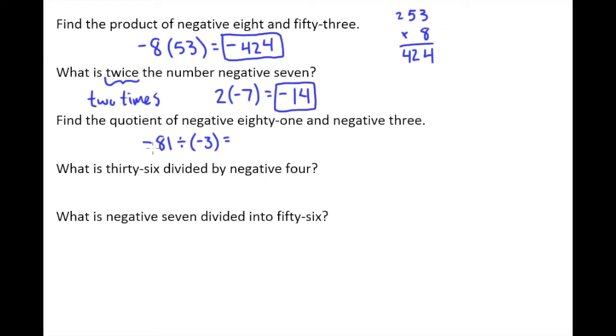Now we know the answer is going to be positive because it's a negative divided by a negative. Over on the side here we'll do a little bit of long division to figure out exactly what the answer is. 3 goes into 8 twice, remainder of 2, drop the 1, 3 goes into 21 seven times, and so we get an answer of 27.